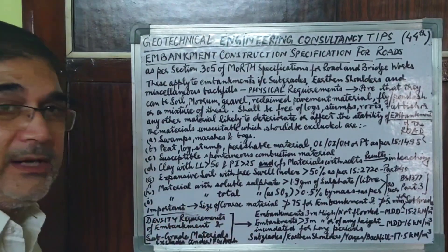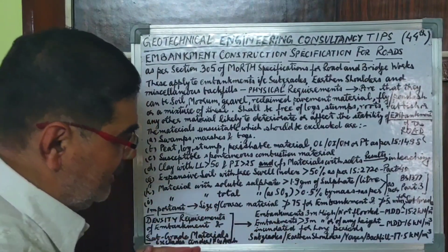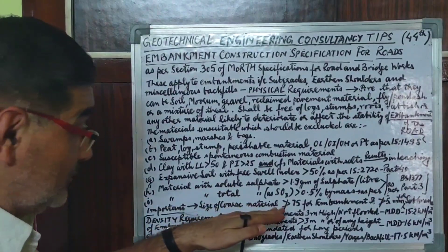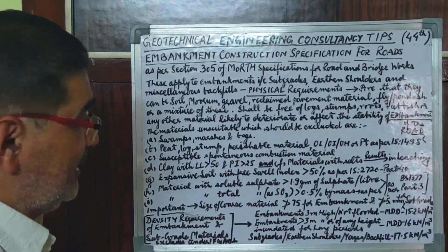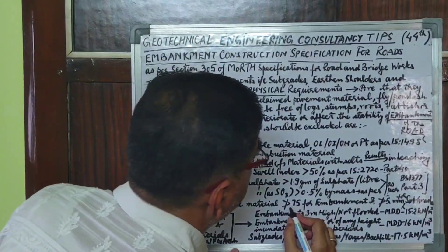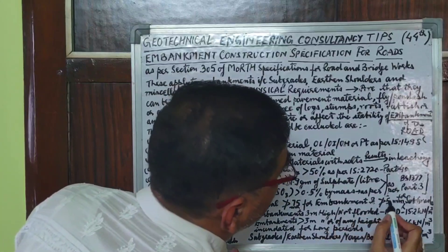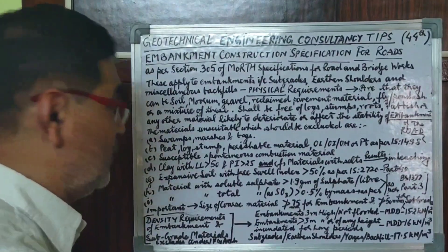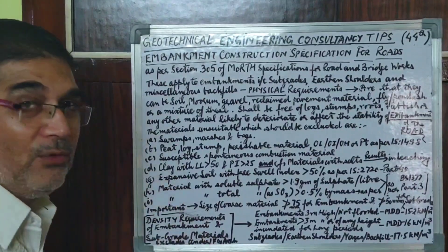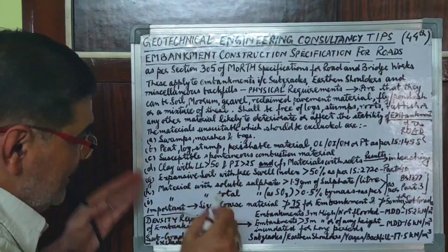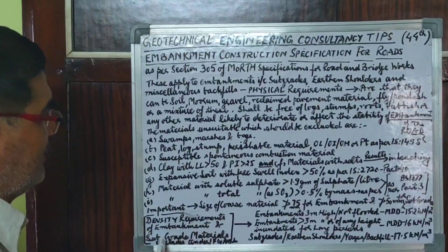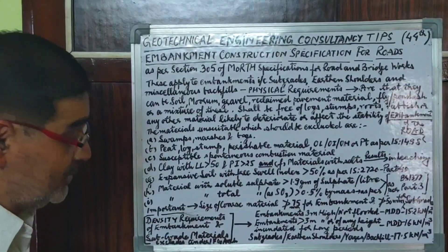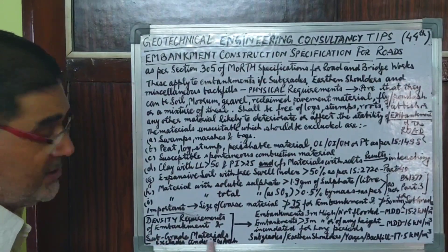The size of the coarse material to be used for embankment construction should not be greater than 75 mm for embankments, and should not be greater than 50 mm for construction of subgrade material.